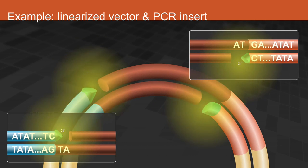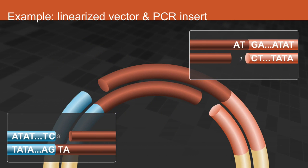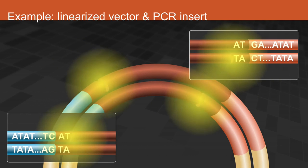The proofreading DNA polymerase removes the extra bases at the 3' end. The polymerase fills the gap, and DNA ligase seals the remaining nick.